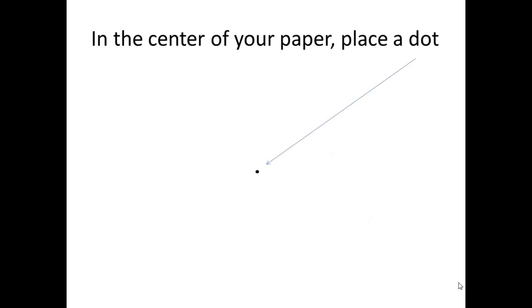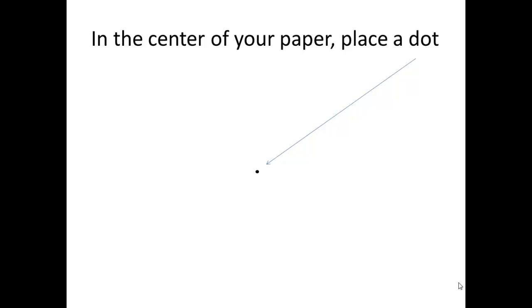So in the center of your paper, somewhere in the middle, place a dot. Use your compass to construct a large circle taking up the entire paper. That means you will anchor in that center dot and make a very large circle all around.